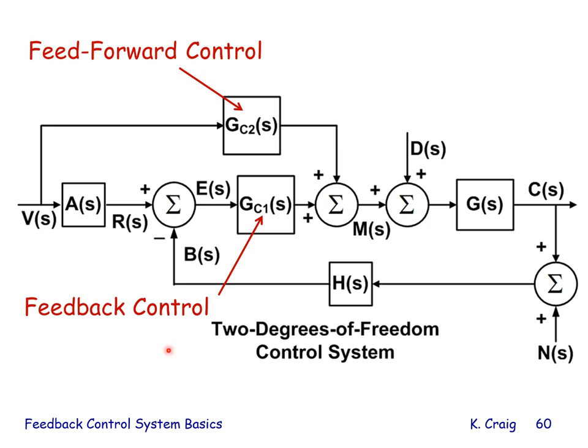Here we see a two-degree-of-freedom control system. G sub C1 is the feedback controller whose purpose is disturbance rejection and insensitivity to modeling inaccuracy — robustness. G sub C2 is a feedforward controller whose goal is command following. This is a two-degree-of-freedom control system where we're not relying on one controller to accomplish all tasks including stabilization, disturbance rejection, robustness, and command following. The two-degree-of-freedom system gives more degrees of freedom to accomplish our control system tasks.